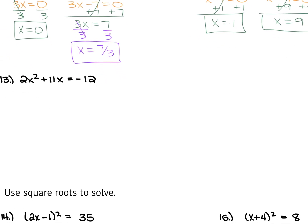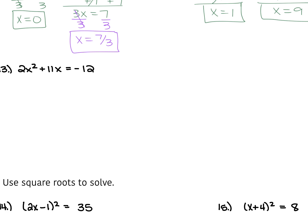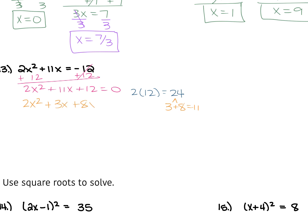For number 13, we have 2x squared plus 11x is equal to negative 12. We have to move the negative 12 over first by adding it to both sides, giving us 2x squared plus 11x plus 12 is equal to 0. Your a is not 1, so that's going to be 2 times 12 is 24. The factors of 24 that add to be 11 are 3 and 8. So this gets rewritten as 2x squared plus 3x plus 8x plus 12 is equal to 0.